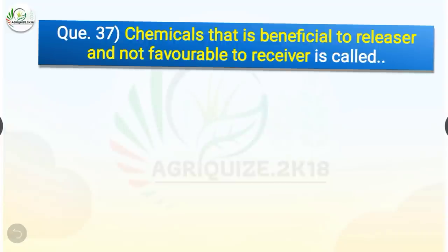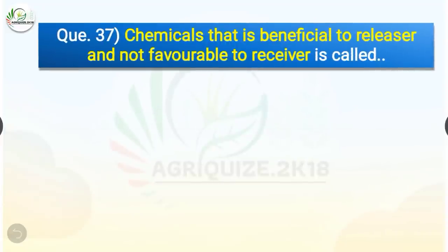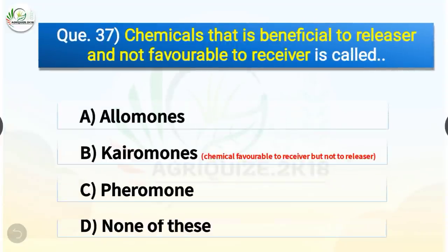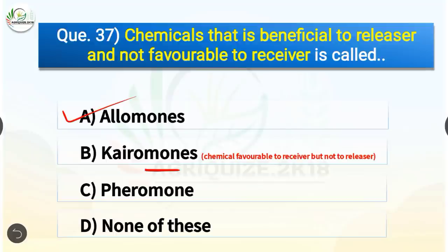Question number 37. Chemicals that are beneficial to the releaser but not favorable to the receiver are called what? The options are allomones, kairomones, pheromones, or none of these. The correct answer is option A, allomones. Chemicals beneficial to the releaser but not favorable to the receiver are called allomones, whereas chemicals favorable to the receiver but not to the releaser are kairomones.